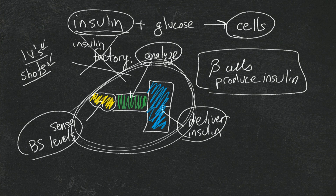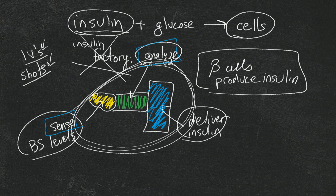A lot of times when we're talking about managing type 1 diabetes, people talk about us as sort of like an artificial pancreas — in the sense that we have to think like a pancreas. The sensing of where blood sugars are, the analyzing of how much we need, and the delivery to cover that — that's our role. Therein lies the rub, because this takes a lot of work and it's exhausting from time to time.